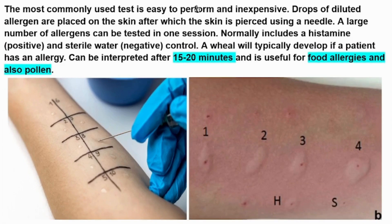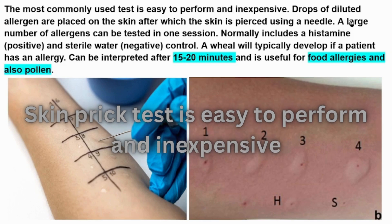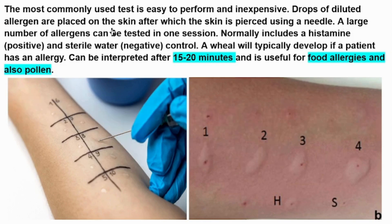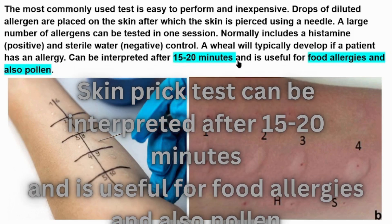Skin prick test is the most commonly used test; it is easy to perform and inexpensive. Drops of diluted allergens are placed on the skin, after which the skin is pierced using a needle. A large number of allergens can be tested in one session. Histamine is the positive control and sterile water is the negative control. A wheal will typically develop if the patient has an allergy, and results can be interpreted in 15 to 20 minutes.